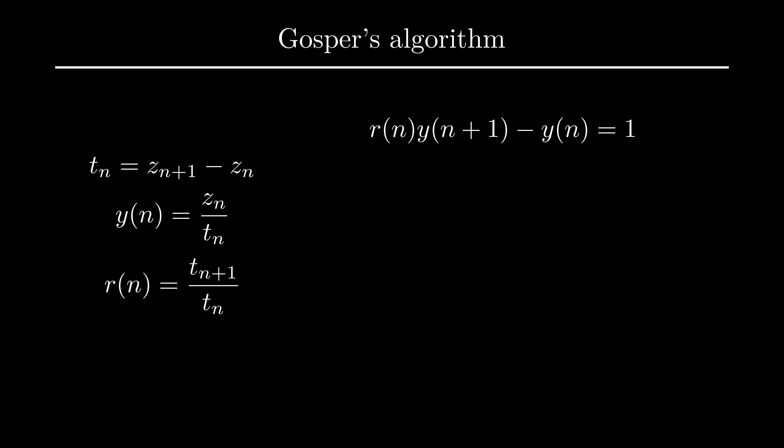Now we define polynomials a, b, c, and a rational function x such that these two relations are satisfied. Note that because x is a rational function, this can always be done. In fact, you can even include an additional condition, this one here.